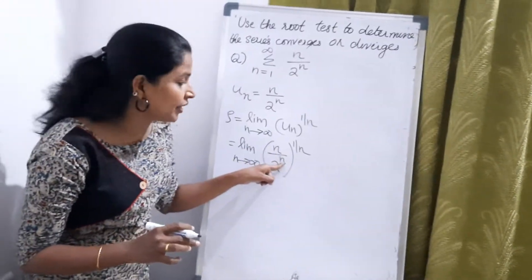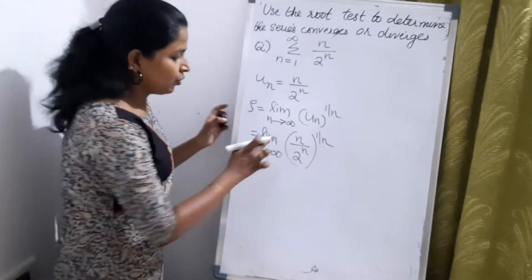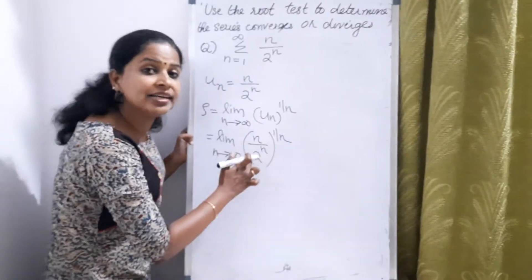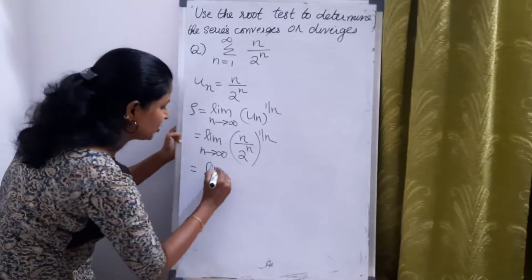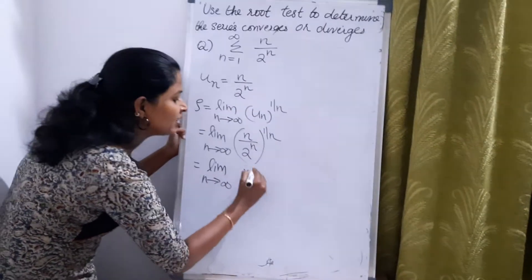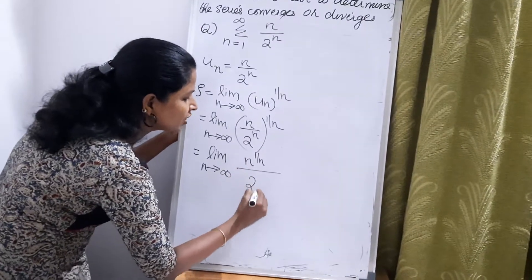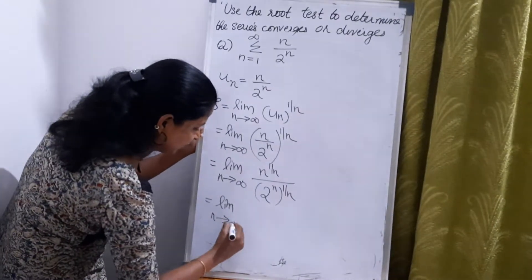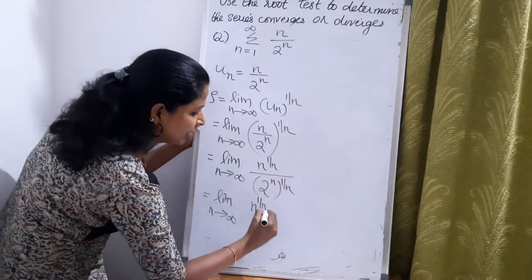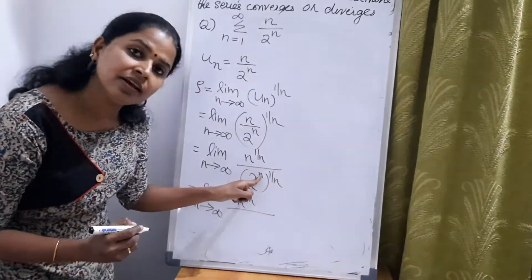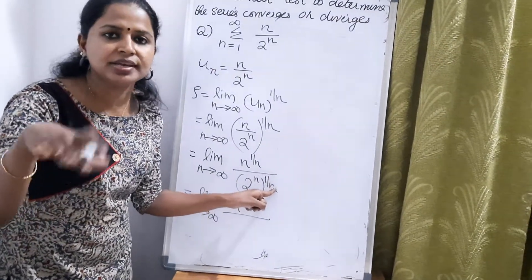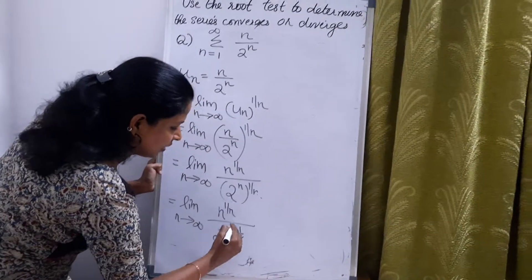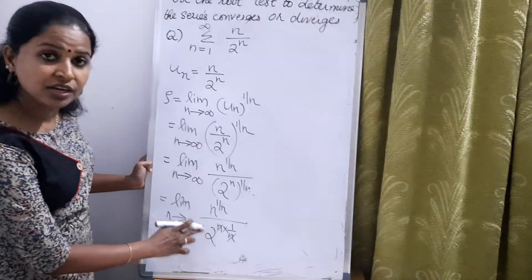This is n by 2 raised to n, the whole raised to 1 by n. A fraction raised to 1 by n equals the numerator raised to 1 by n divided by the denominator raised to 1 by n. That is limit n tends to infinity of n raised to 1 by n, divided by 2 raised to n raised to 1 by n. Since a raised to m raised to n equals a raised to mn, we get 2 raised to n into 1 by n, so n and n cancel, giving 2 raised to 1.